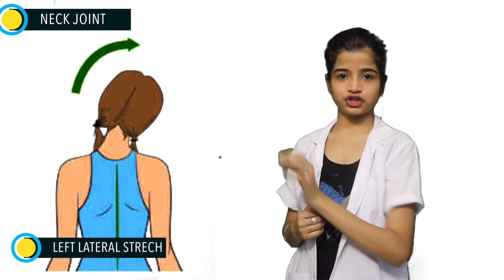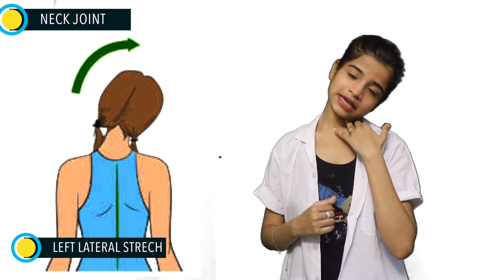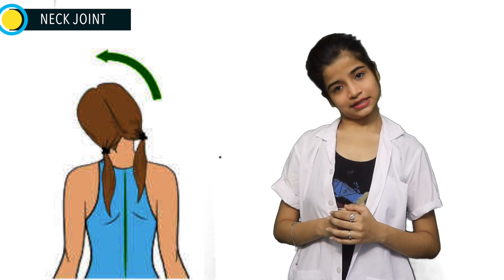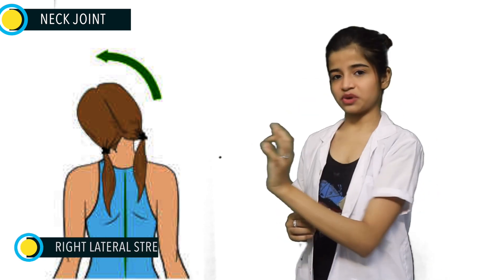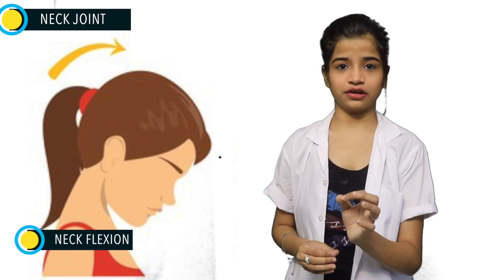Let's see what movements our neck joint can allow. Starting with the first movement, our neck allows us to perform left lateral stretch — turning our neck to the left side like this is left lateral stretch, and vice versa, right sideways movement like this is called right lateral stretch. The next movement is moving your head forward to 45 degrees, which is called flexion.